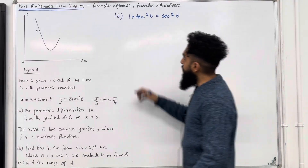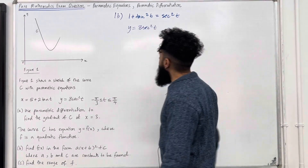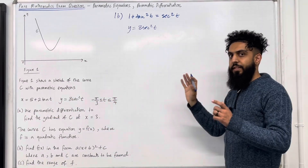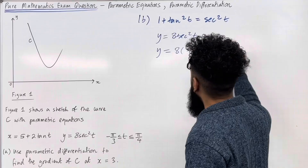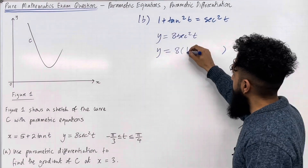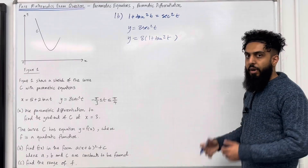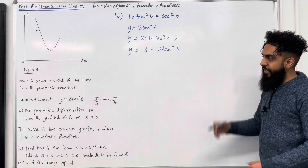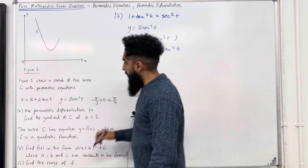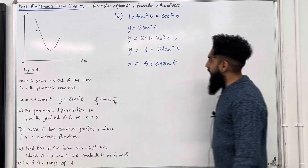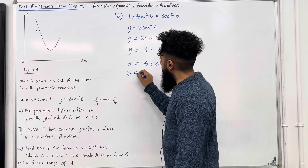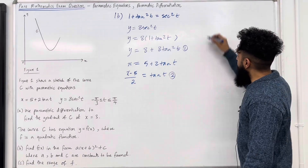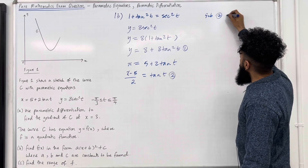Starting with the y equation: y equals 8 sec squared t. Going back to the x equation, there is a tan involved. So I can rewrite sec squared t as 1 plus tan squared t, giving y equals 8(1 plus tan squared t). Expanding the bracket gives 8 plus 8 tan squared t. From the x equation, x equals 5 plus 2 tan t, so I can make tan t the subject: tan t equals (x minus 5) over 2.